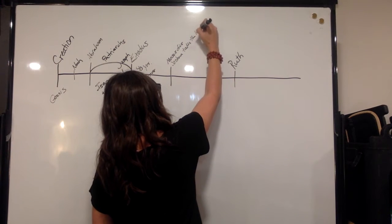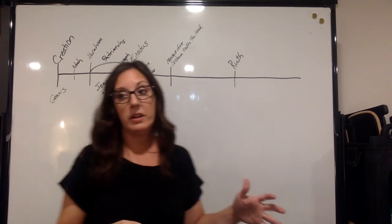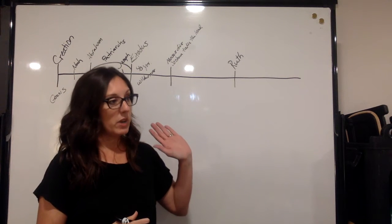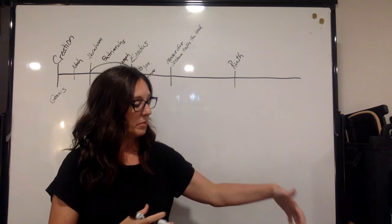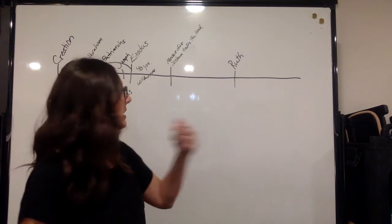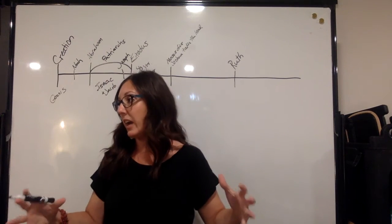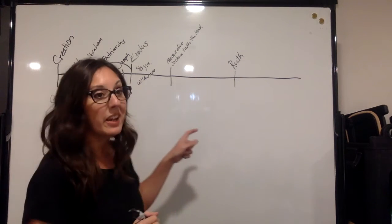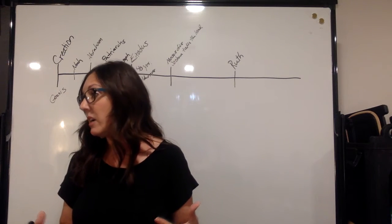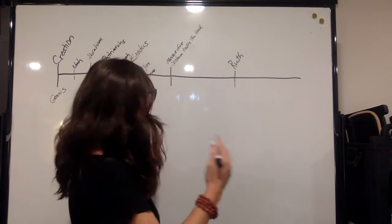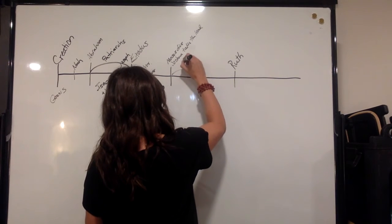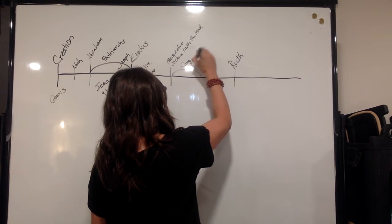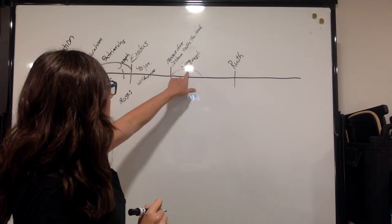Then we have the Exodus — God uses Moses to lead his people out of Egypt. They go to the wilderness for 40 years wandering under Moses's leadership. That gets us through Exodus, and then we have Leviticus, Numbers, and Deuteronomy. At the end of Deuteronomy, Moses dies — that's the end of the Pentateuch — and he passes leadership on to Joshua.